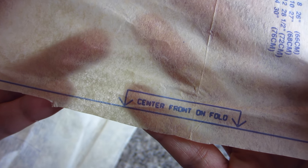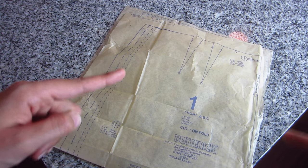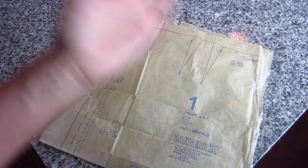So when you go to place this on your fabric, you're going to place this whole line on the fold of your fabric and you're only going to cut out one, because when you cut something on the fold, you cut out one of them and then when you open it up, you have double the size.